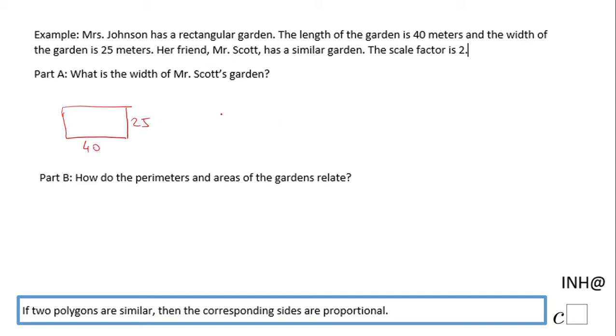Mr. Scott has a similar garden. The only thing is the scale factor of Mr. Scott's garden is 2. In other words, we're gonna multiply the length of Miss Johnson's garden by 2, and we get 80, and multiply the width of Miss Johnson's garden by 2, and we get 50.